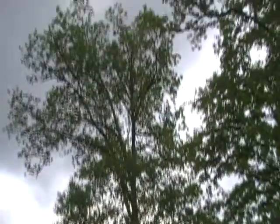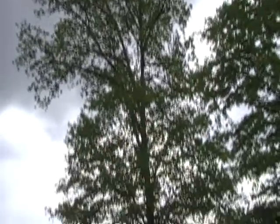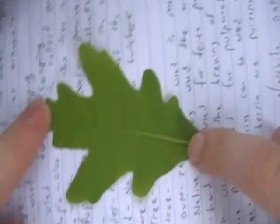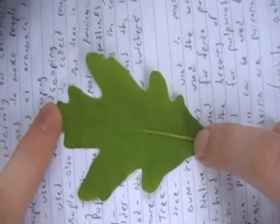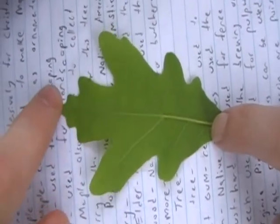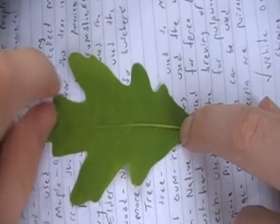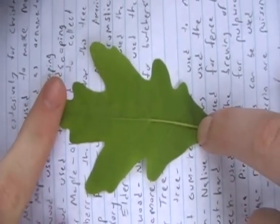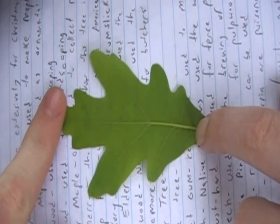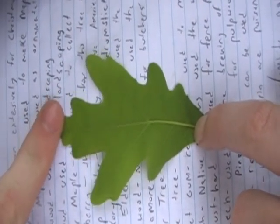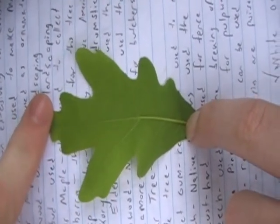Here we have a white oak. The white oak leaf has a pinnate vein structure, it is a simple leaf, and it is lobed to several points. The white oak was used in shipbuilding in the 18th century because it is very strong wood.